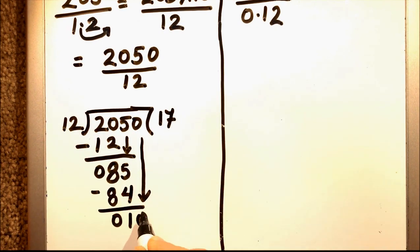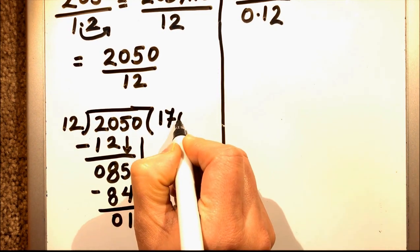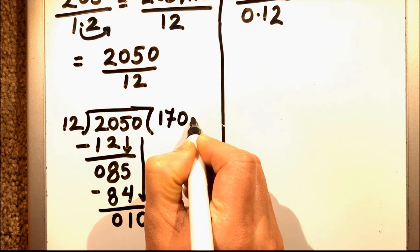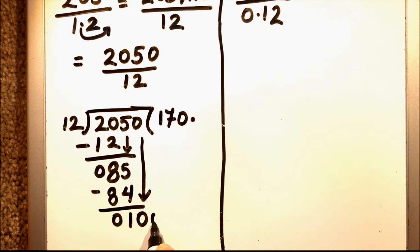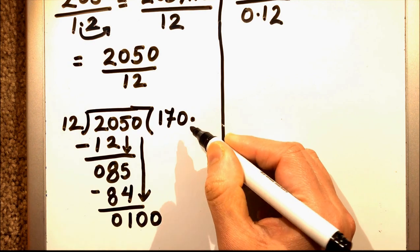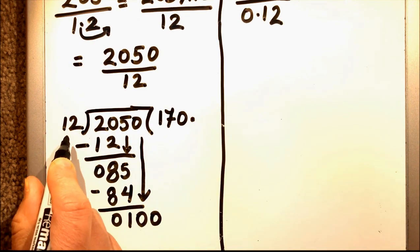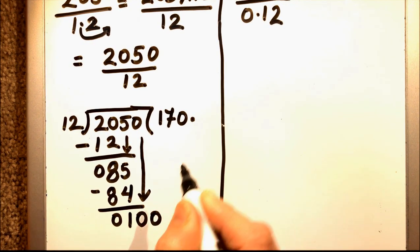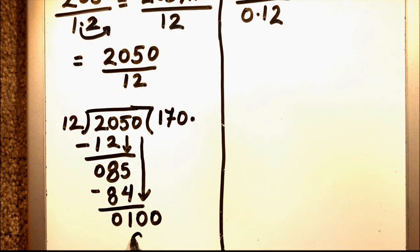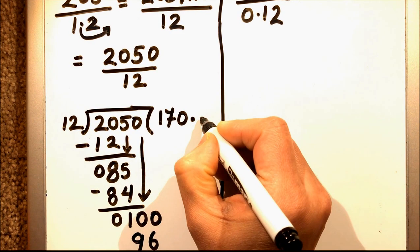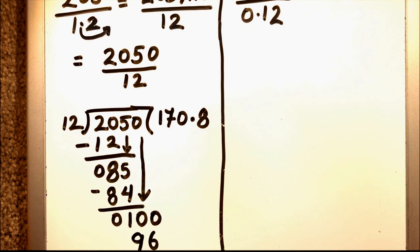And then we'll drop down the next number which is 0. Now we see 10 which is less than 12, so we'll add a 0 here and then we'll put a decimal point and add a 0 here because this is not divisible by 12.